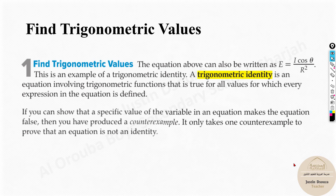To find trigonometric values, let's understand what a trigonometric identity is. If an equation is a set formula — meaning this equation will be true for set values — then it's an identity. The most common identity we know is tan θ = sin θ / cos θ. For any defined θ value, both sides will be equal, so this is an identity.